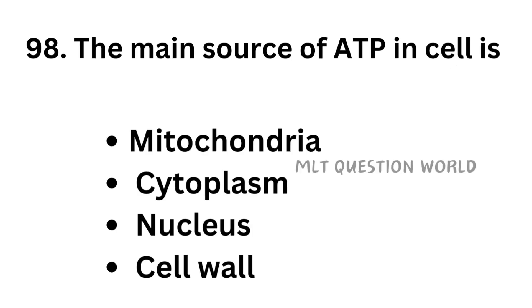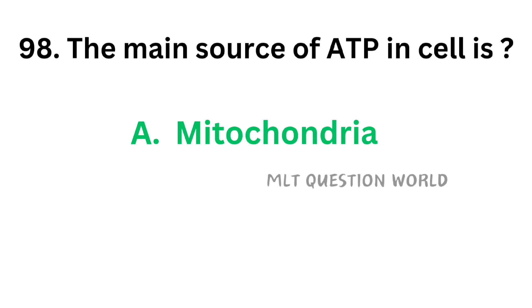Question number 98. The main source of ATP in the cell is: Option A: Mitochondria, Option B: Cytoplasm, Option C: Nucleus, Option D: Cell wall. The correct answer is Option A — Mitochondria. The main source of ATP in the cell is the mitochondria.